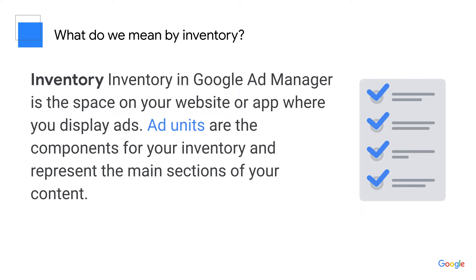Now, keep thinking about your cut-out pieces of ad units. Advertisers, buyers and brands want to buy those ad units from you. Just like a grocery store keeps track of how many gallons of milk they'll have to sell to consumers, you as a publisher should keep track of how many ad units you have to sell to buyers. Those ad units are your inventory. Once you know how much inventory you have and where it is, you need to translate that into an optimal setup in Ad Manager.